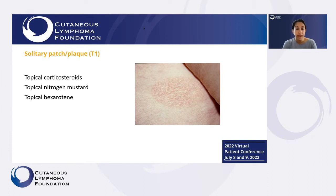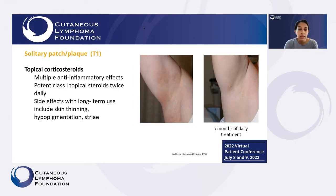When patients have one or a couple of solitary patches or plaques, applying a cream can be feasible and helpful. Options include topical steroids, topical nitrogen mustard, or topical bexarotene. Topical corticosteroids are used for many inflammatory conditions including this type of lymphoma — we'll often prescribe potent class one topical steroids like clobetasol to use twice a day. It does have good overall response, though it may not clear the skin entirely; there may be some residual hyperpigmentation or darkening of the skin.